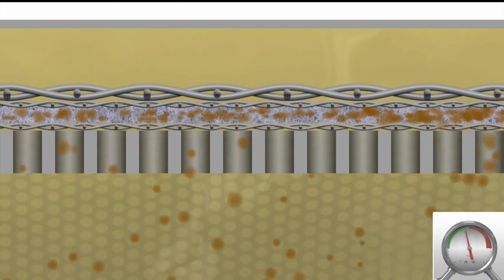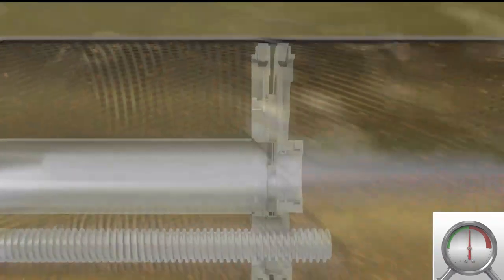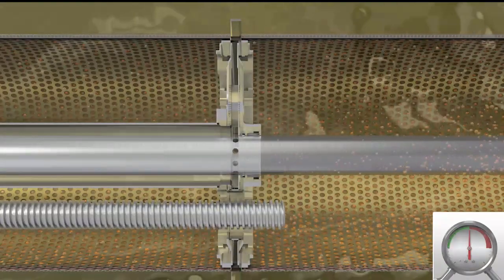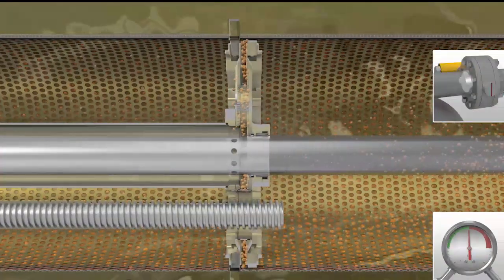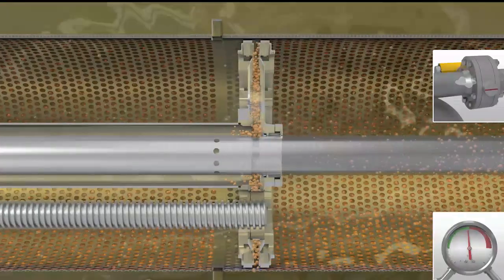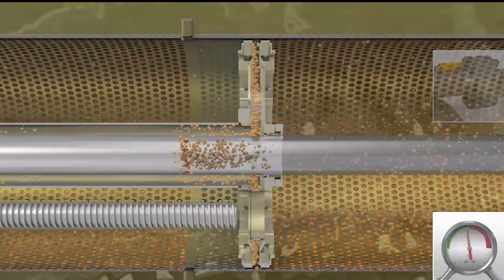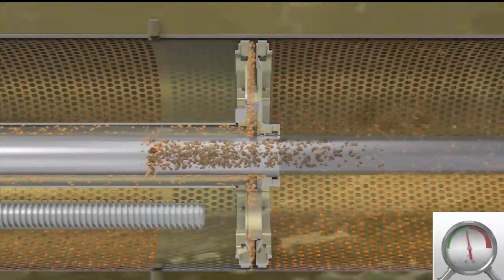Particles gradually blocking the pores of the filter material increase the differential pressure. Upon reaching a preset rise of differential pressure or after an adjustable period of time, a backwash is initiated.